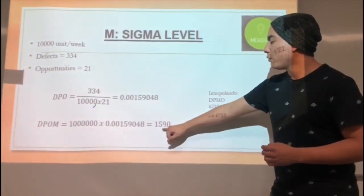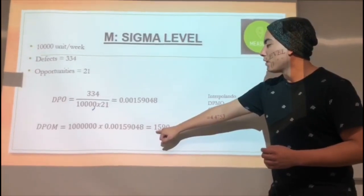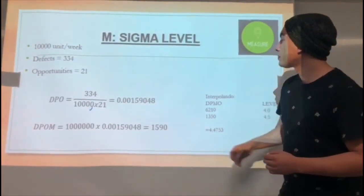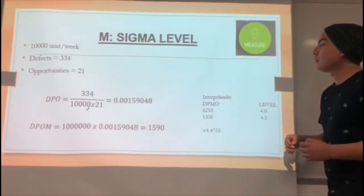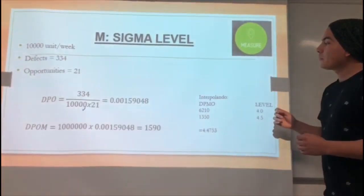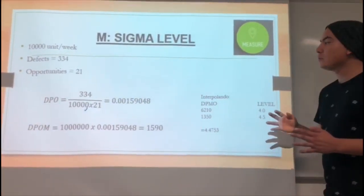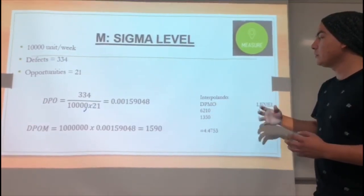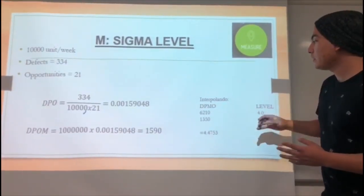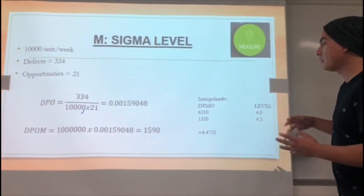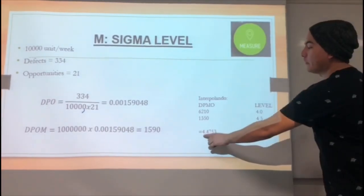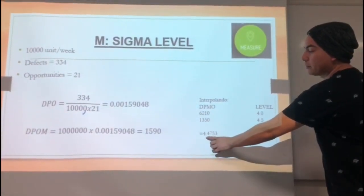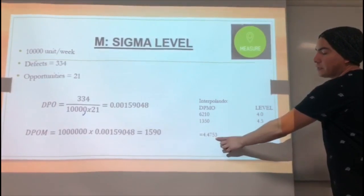Then we multiply the result by 1 million and we obtain 1,590 DPMO. Finally, we look at the DPMO table and interpolate to obtain the sigma level. In this case it is 4.4753.